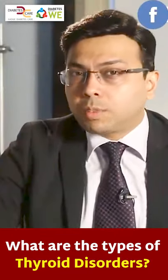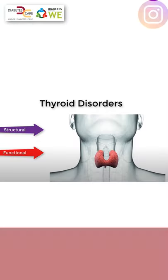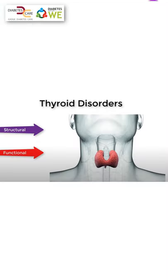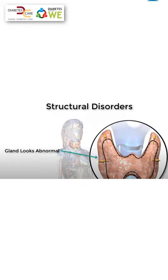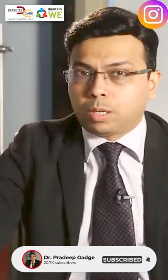Patients often ask me what the different types of thyroid disorders are. Thyroid disorders can be simply divided into two types of problems: structural and functional. Structural means the gland looks abnormal — there will be a large gland which may or may not be functionally abnormal. So that is the structural problem.